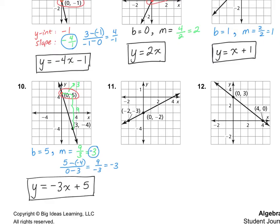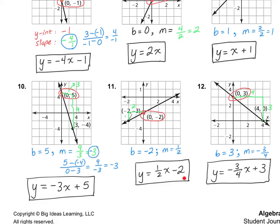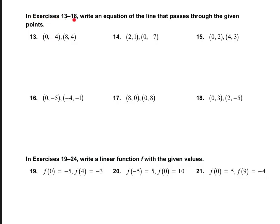For number 11, I got y equals one half x minus 2. And for number 12, y equals negative three-fourths x plus 3. In Exercises 13 through 18, we are told to write an equation of the line that passes through the given points. We are given two points and need to figure out the y-intercept and the slope.